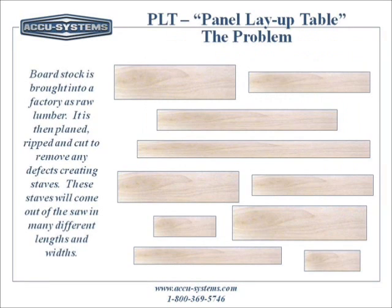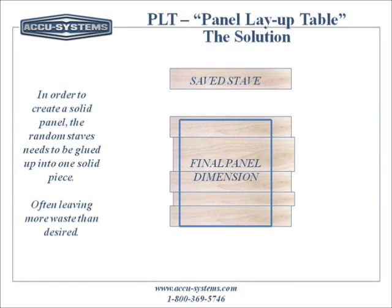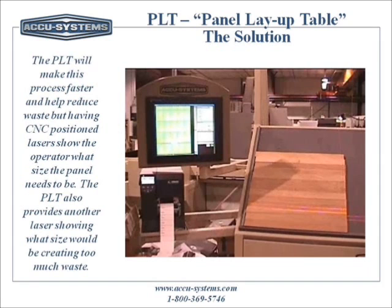In many woodworking facilities, the process of taking boards that are of random length and width and combining them to create an edge-glued panel requires a woodworker to do many things at the same time. They need to manage the work order list, match the wood grain from one board to another, match the color of all the boards on a panel, and create a panel that is large enough for sizing downstream but not so large that valuable wood is wasted. Once all that is done, then you need to mark or label that panel.